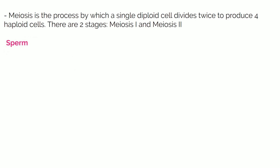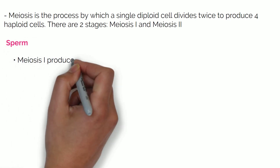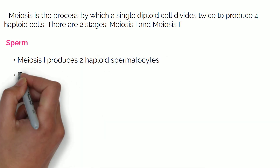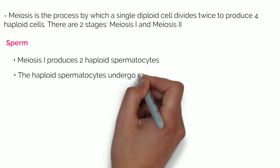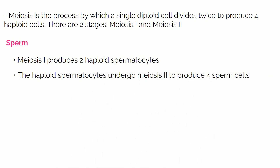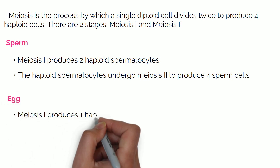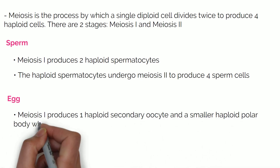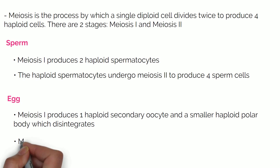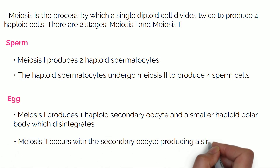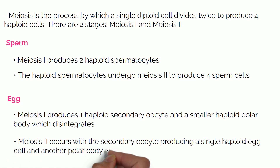For sperm, meiosis I produces 2 haploid spermatocytes. The haploid spermatocytes undergo meiosis II to produce 4 sperm cells. For the egg, meiosis I produces 1 haploid secondary oocyte and a smaller haploid polar body which disintegrates. Meiosis II occurs with the secondary oocyte, producing a single haploid egg cell and another polar body which is lost.